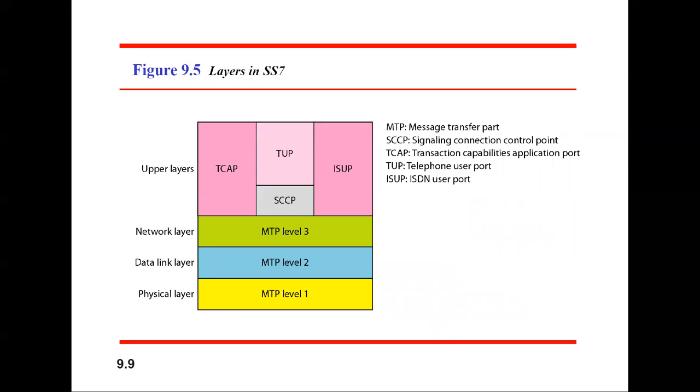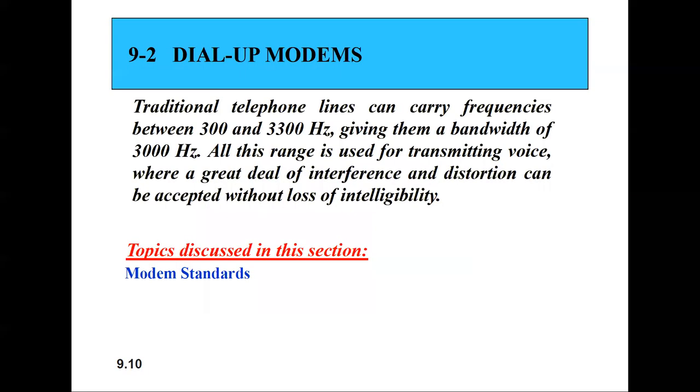In this figure, telephone networks are divided into several layers, four in total. MTP is message transfer part, SCCP is signaling connection control point, TCAP is transaction capabilities application port. The four layers are: first physical, second data link, third network, and the last is upper layer.